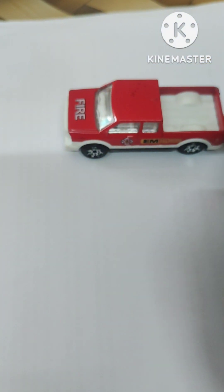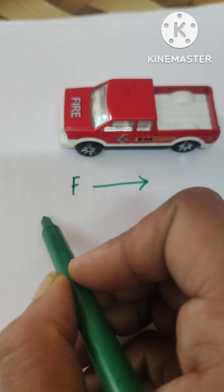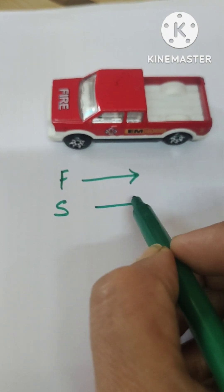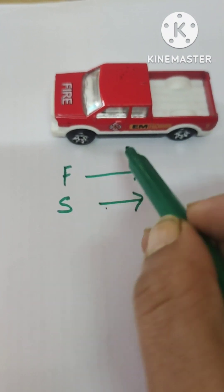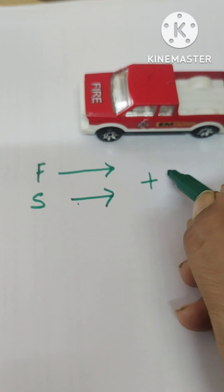Or we push from this side or from this side. Suppose if you have pushed from this side, the force is also in this direction and the displacement is also in this direction. When the force and displacement both are in the same direction, like this way, the work done is said to be positive.